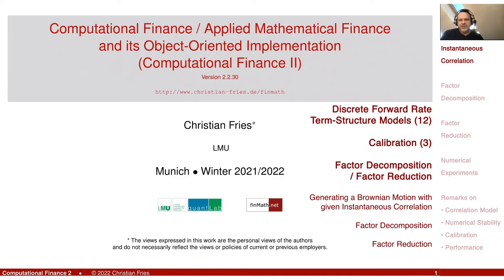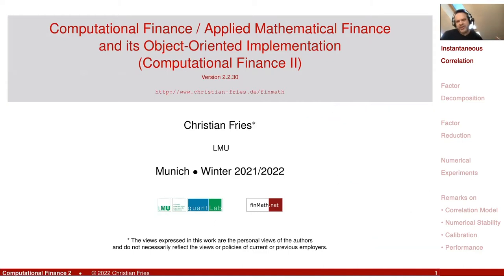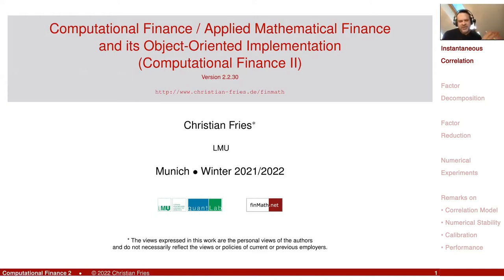Today in computational finance, applied mathematical finance and its object-oriented implementation, I'd like to continue discussing the calibration of our term structure model. The main focus today is on the correlation structure — more specifically, how do we generate correlated Brownian motions?